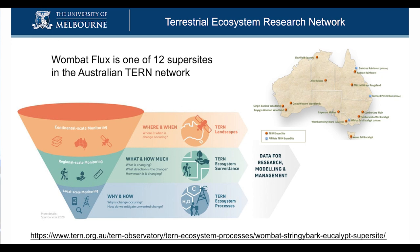The Wombat Forest flux station is part of one of 12 super sites of the Terrestrial Ecosystem Research Network — a federally funded research infrastructure doing ecosystem monitoring across Australia in three tiers. The first is continental-scale satellite monitoring. The second is ecosystem surveillance — a thousand plots across the landscape for biodiversity assessment. The third is finer-scale monitoring: Terrestrial Ecosystem Research Network ecosystem processes, which is what the Wombat flux tower does. It's a long-term project with about 10 years of funding and at least three more years ahead.